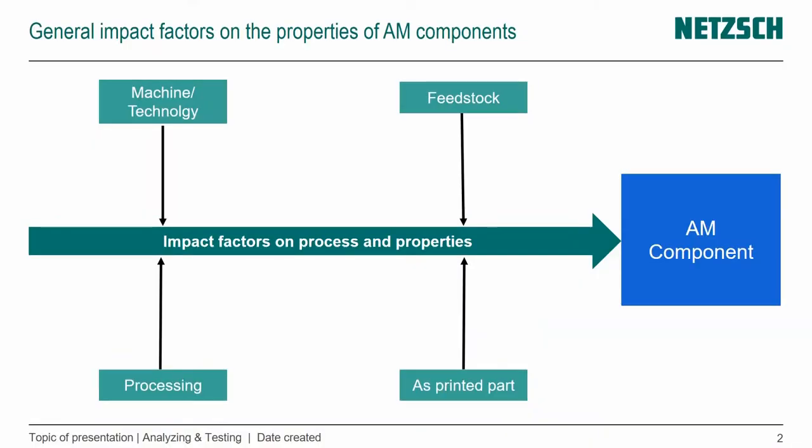We have four big impact factors that have an effect on the process and the properties. That's the machine or the technology in general that we're using, the feedstock, the processing, and then what we do with the as-printed part to actually get an additively manufactured component.